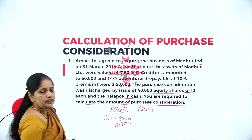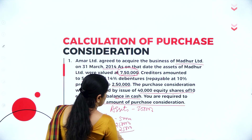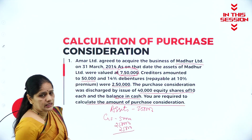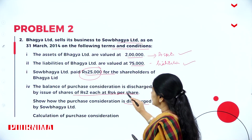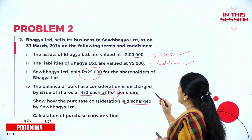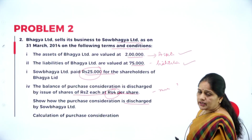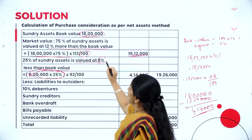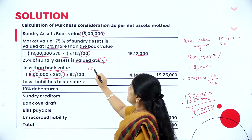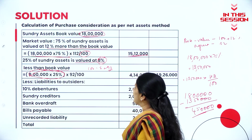The value of debentures is 2 lakh 50 thousand, so premium will be 25 thousand. Total payment for debentures is 2 lakh 75 thousand. The issue price of the share is rupees 4, but the number of shares issued is not given. They have told it is valued at 8% less, so this is 100 minus 8, that is 92, so 92 by 100.